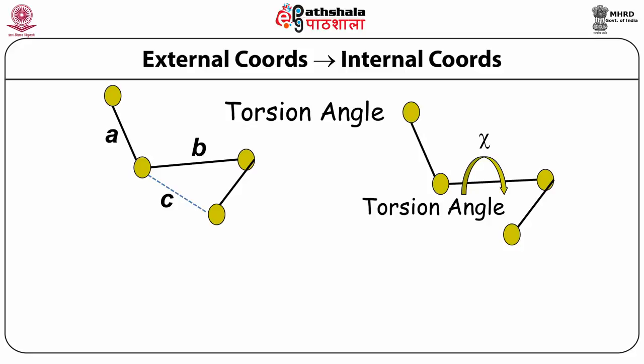Now let's come to the torsional angles — the situation here is a little more complex. A torsional angle requires four atoms connected in a chain. Given any three atoms in space, a plane is defined. So with four atoms a, b, c, and d: atoms a, b, and c define one plane, and atoms b, c, and d define another plane. If these two planes are not coplanar, there is a certain angle between them — and this angle is the torsional angle.